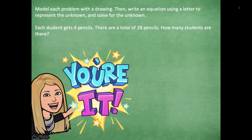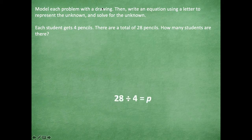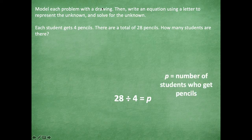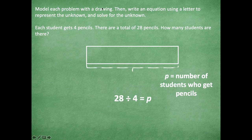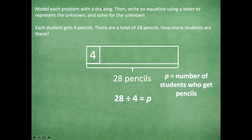All right friends, make sure to click pause if you need more time. Otherwise, here we go. So my equation is 28 divided by 4 equals P because there's 28 total pencils, four pencils for each student, and P is going to represent the number of students who get pencils. Here's my tape diagram. I know that there are 28 pencils. I know that each student gets four, so all of these inside my tape diagram are represented by P.